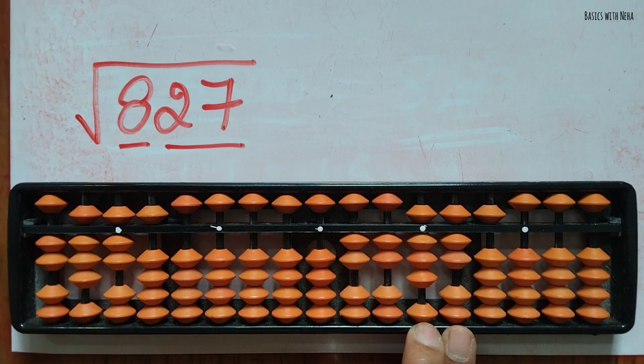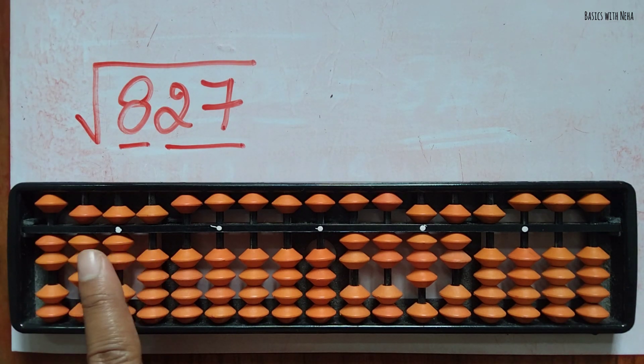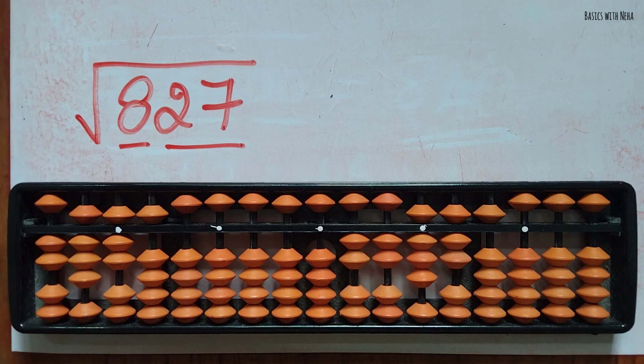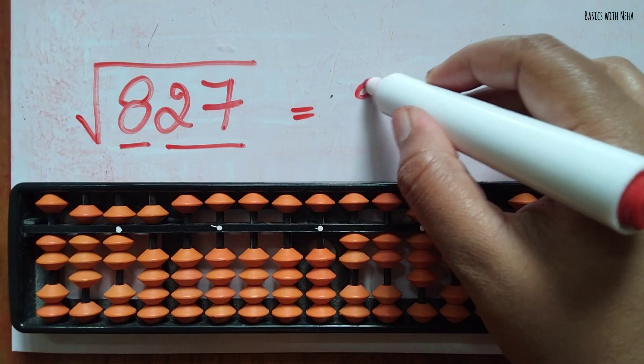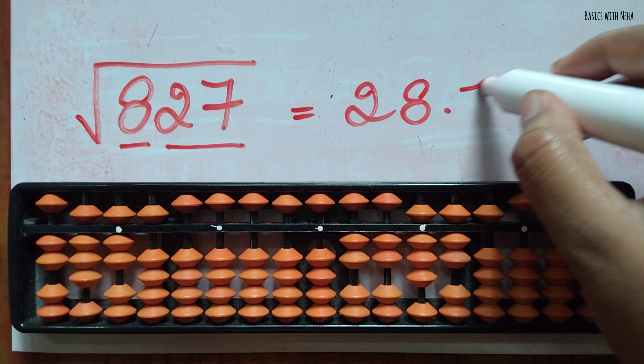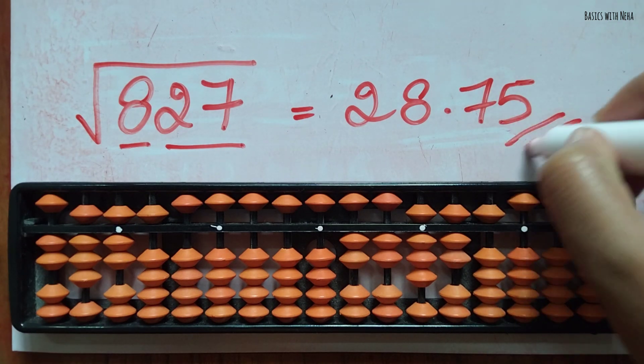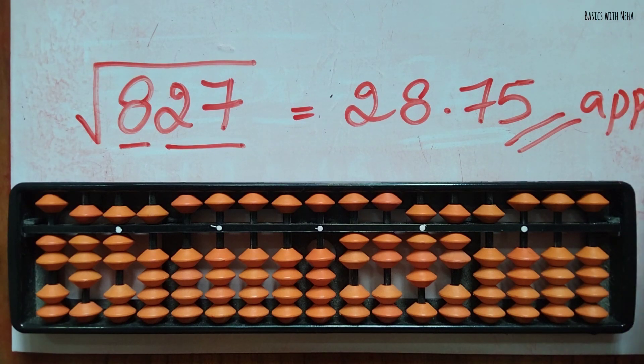Now the next number, again we can just stop in two decimal places, we not have to continue more than that. If you're not really sure about the answer you can just write it as approx. Now the answer is 28.75. If you're not sure you can write approx. I hope this video was helpful, for more such videos please subscribe, thank you.